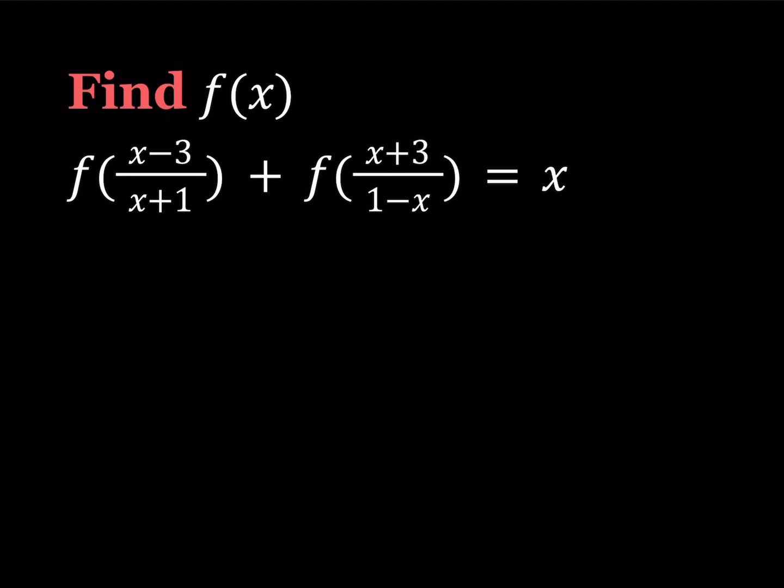Hello everyone. In this video we're going to be solving a functional equation from the book Putnam and Beyond. I already told you about the book in another video, I'll also share some links down below. Let's get started. So we have the equation f of (x minus 3) over (x plus 1) plus f of (x plus 3) over (1 minus x) is equal to x, and we're supposed to find f of x.